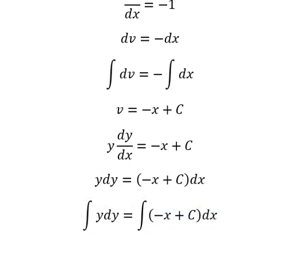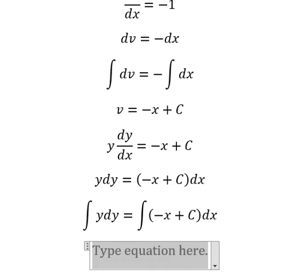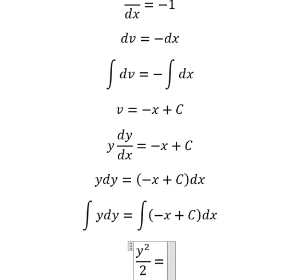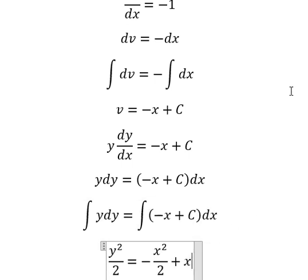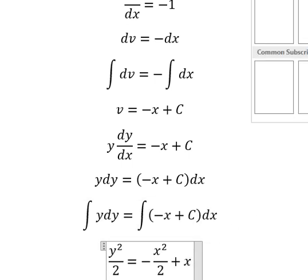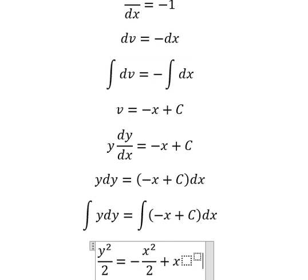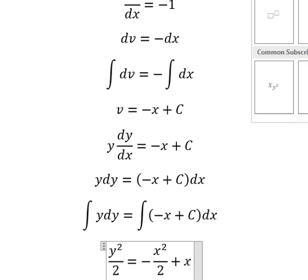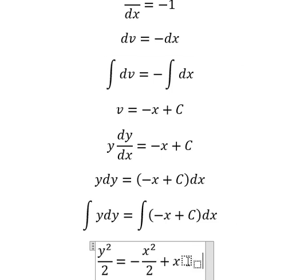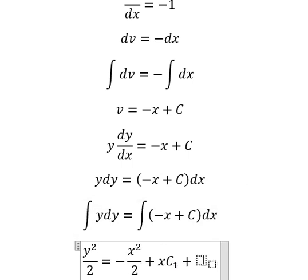The integration of this one you call y square over 2. This one you call negative x square over 2. This one you call x. And we have c number one. That's the constant number one. Plus c number two. That's the constant number two.